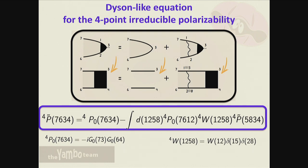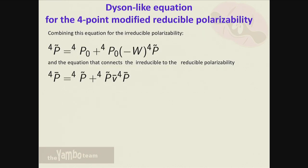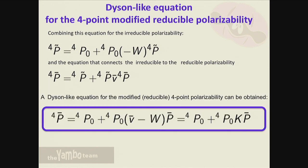Doing it in the same way I mentioned, you can use the equation for the irreducible polarizability and the equation connecting the irreducible to the reducible - in particular pi-bar, because I want the macroscopic quantity. Combining the two, you arrive at exactly the same equation Fulvio presented before, with some differences I'll explain now.